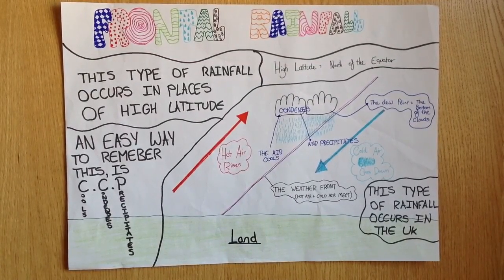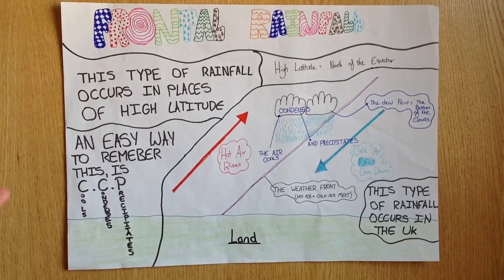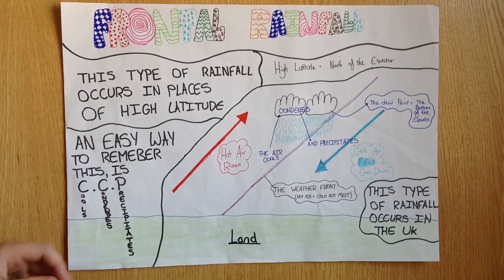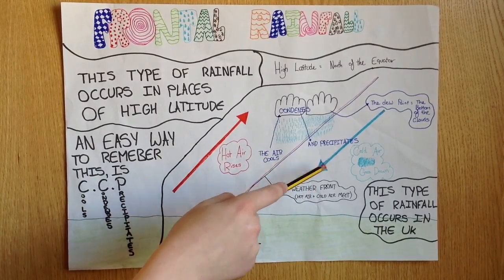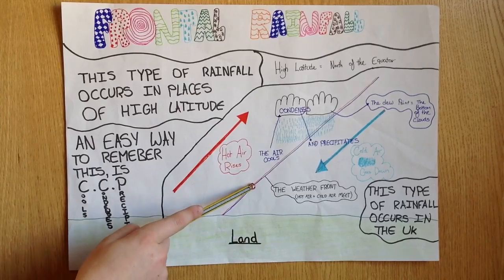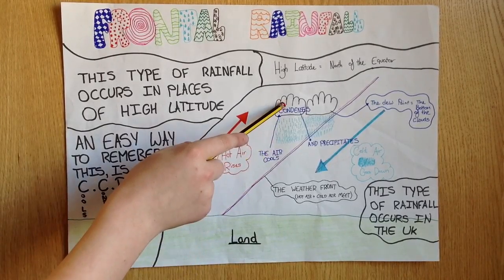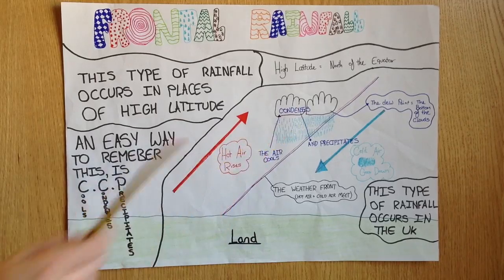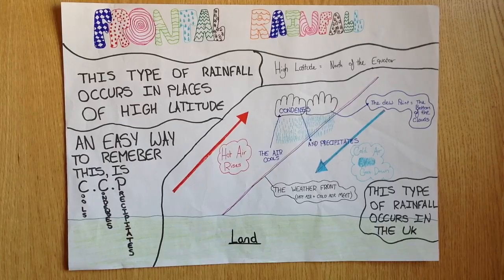Welcome to my revision clip on frontal rainfall. A common question that occurs in exams is to draw and describe frontal rainfall. Firstly, the hot air rises and the cold air goes down. They meet at the weather front. The air then cools, condenses into clouds and precipitates as rain. An easy way to remember this is that the air cools, condenses and precipitates — CCP.